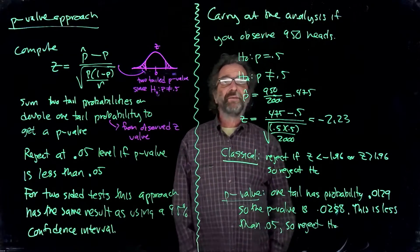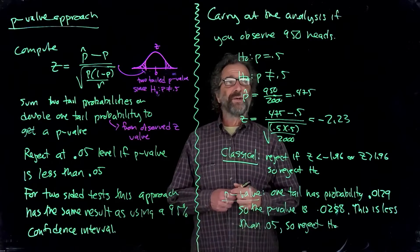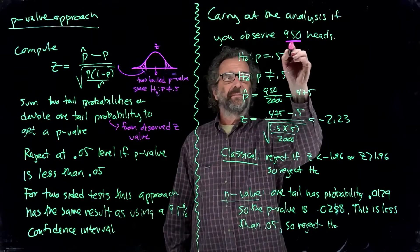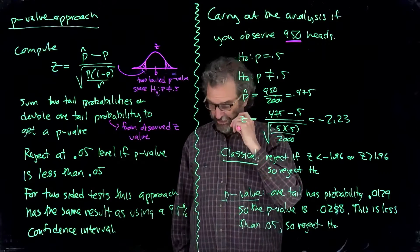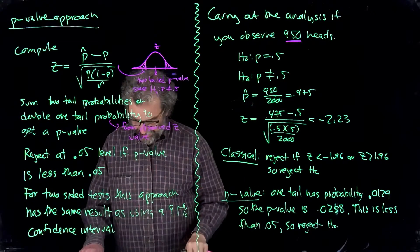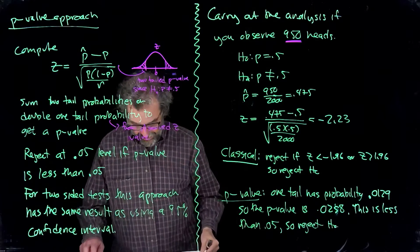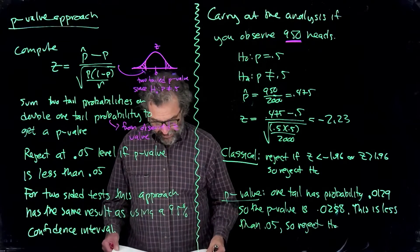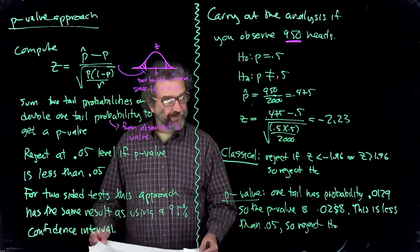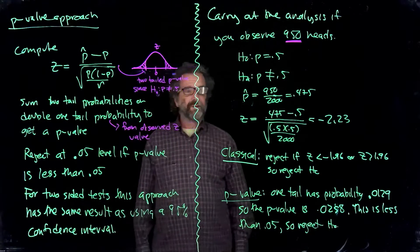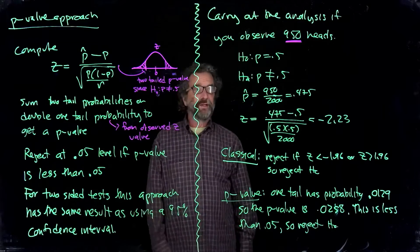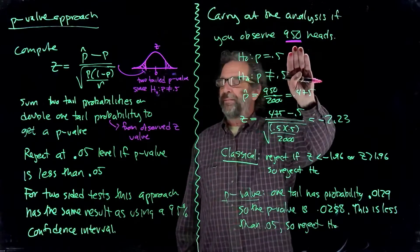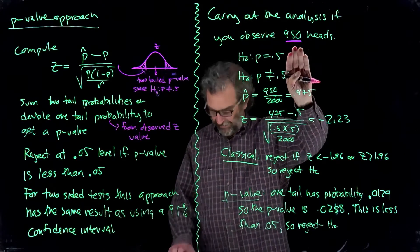So let's go ahead and carry this out. Suppose you toss a coin 2,000 times and you observe 950 heads. So we said back when we did the computation, I forget the number now, we needed less than 950 or more than 1044, based on the z-value of plus or minus 1.96. So without going here, we know that number is less than 956. Look at it again. So we're going to reject the null hypothesis.